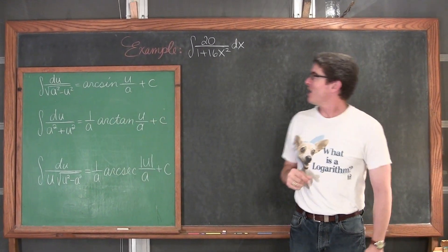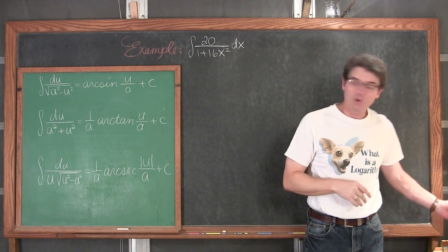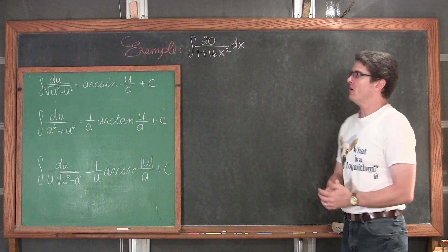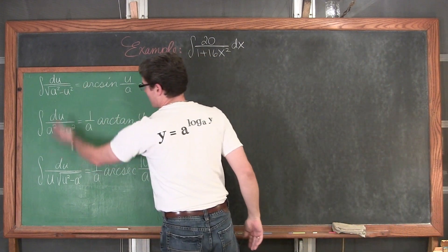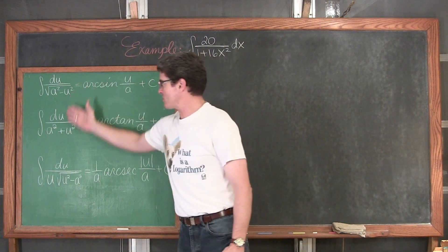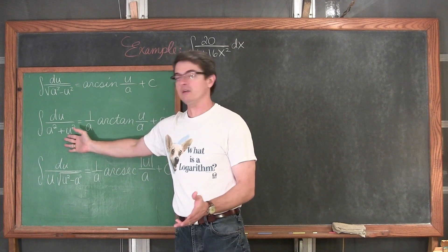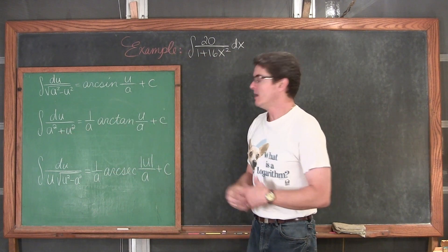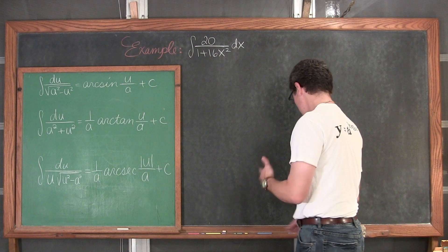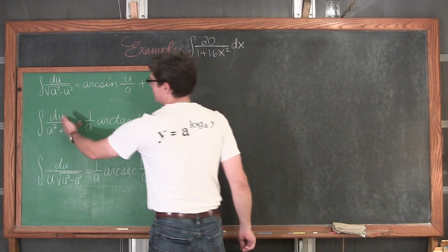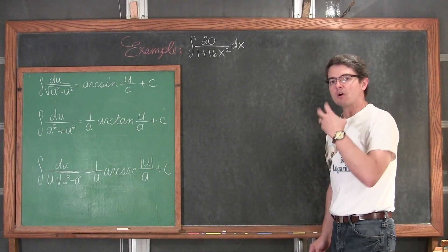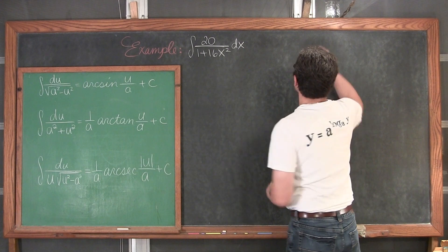Our first example: we want to find the integral of 20 over (1 + 16x²) dx. From the video we are going to go from easy to hard. Our denominator does not have any radicals in it, so that means we are pretty much going to be using this integration rule and coming up with an answer dealing with arctangent. We have du over a² plus u², so a is going to be a constant and u is our function. We have an a value of 1, since a² equals 1.